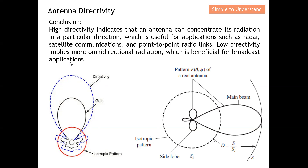Low directivity implies more omni-directional radiation, which is beneficial for broadcast applications. For example, an FM broadcast antenna cannot focus energy in one direction — the goal is for everybody to receive the signal. So broadcast systems require low directivity and omni-directional radiation. With that, I'd like to end this discussion — please like and subscribe, and I hope to see you soon.